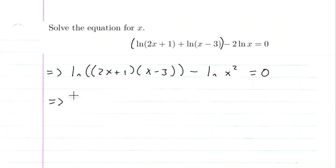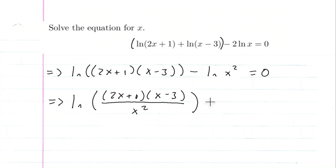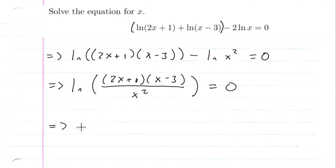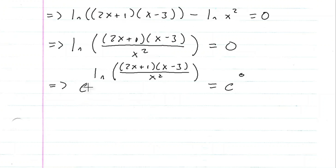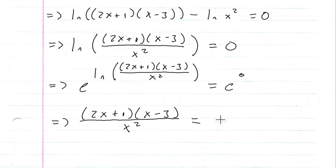Now I can use the quotient rule, so this implies that ln of (2x + 1)(x − 3) all over x squared is equal to 0. This is a really nice equation, because now I can just make the base e. So e to the natural log of (2x + 1)(x − 3) all over x squared equals e to the 0. Since e to the natural log of something is that something, and e to the 0 is 1, this gives me (2x + 1)(x − 3) all over x squared equals 1.